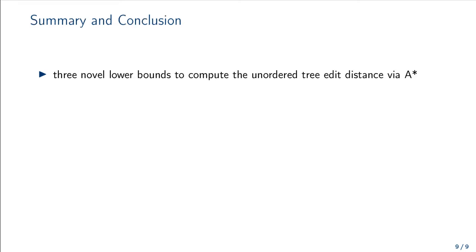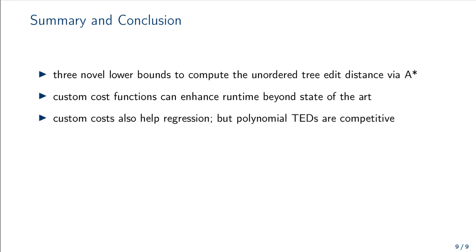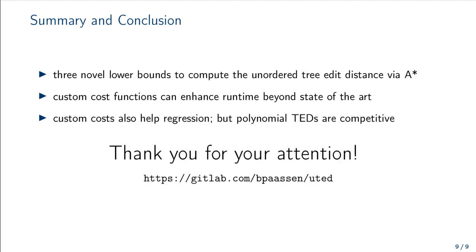In summary, we proposed three novel lower bounds to compute the unordered tree edit distance via an A-star algorithm. All of these lower bounds are compatible with custom edit costs. This is important, because custom edit costs can improve the runtime beyond the state of the art. For regression, we found that custom edit costs help as well. However, polynomial tree edit distances were competitive, so they should always be considered as surrogates for the unordered tree edit distance in practice. Thank you very much for your attention, and if you are interested in the source code for this approach or the experiments, please consider this GitLab link.